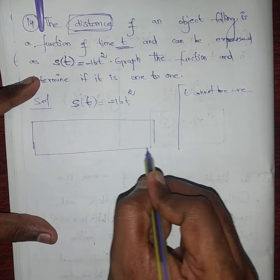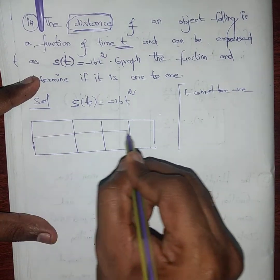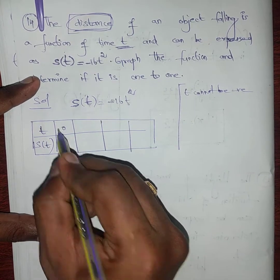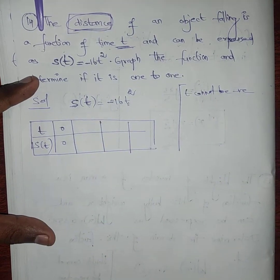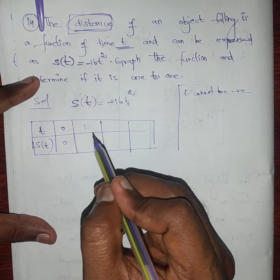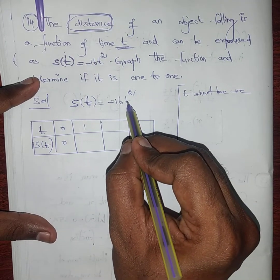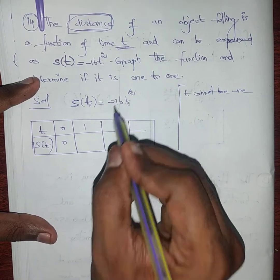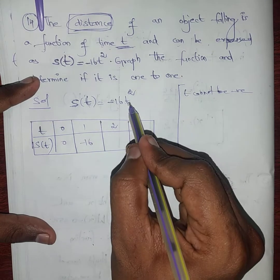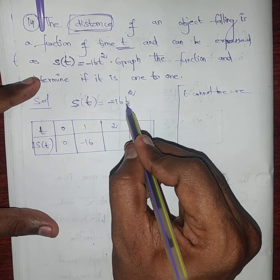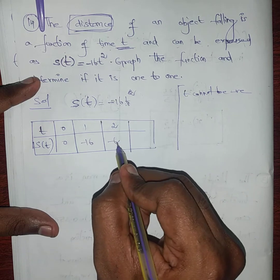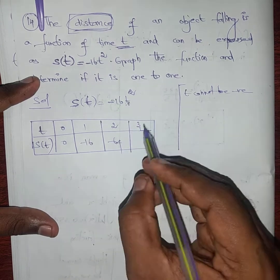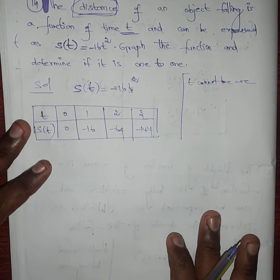Let me put simple values only. Setting up a table with t and s(t): when t = 0, s = -16(0)² = 0. When t = 1, s = -16(1)² = -16. When t = 2, s = -16(2)² = -64. When t = 3, s = -16(3)² = -144.